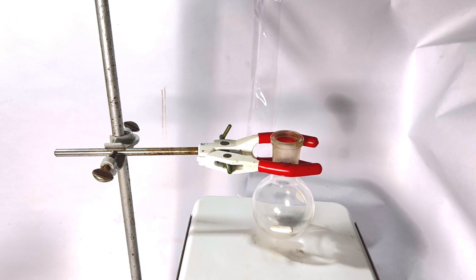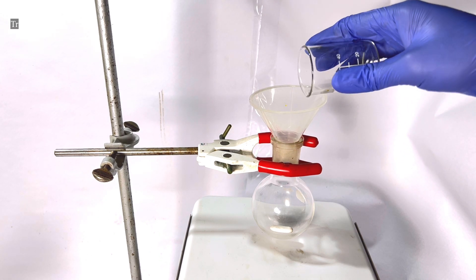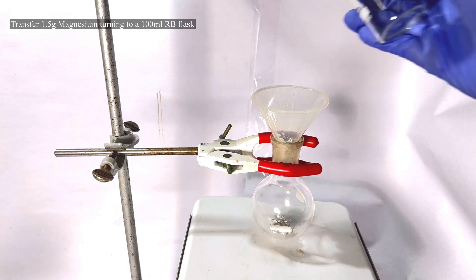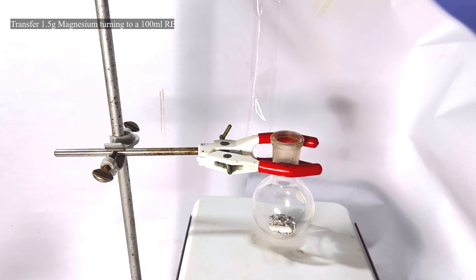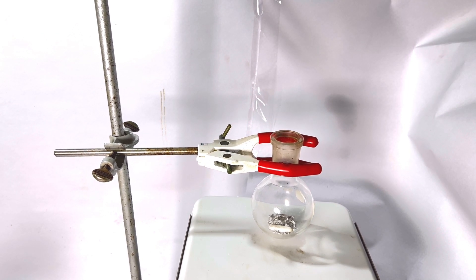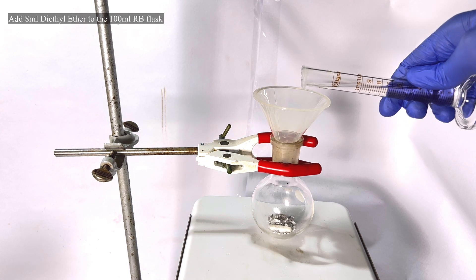Let's get started. A 100 ml perfectly dry round bottom flask is clamped on a hot plate stirrer with a stirring bar inside. Then 1.5 grams of magnesium metal turnings was added to it. The magnesium metal turnings must be as fresh as possible with no oxide or carbonate covering on top.